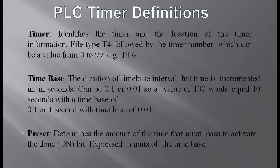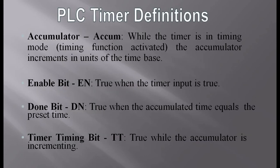The accumulator, defined as 'accum', increments in units of the time base while the timer is in timing mode, until the done bit is reached. There are three bits: Enable bit (EN) — true when timer input is true; Done bit (DN) — true when accumulated time equals preset time; and Timer Timing bit (TT) — true while the accumulator is incrementing, from EN to DN.